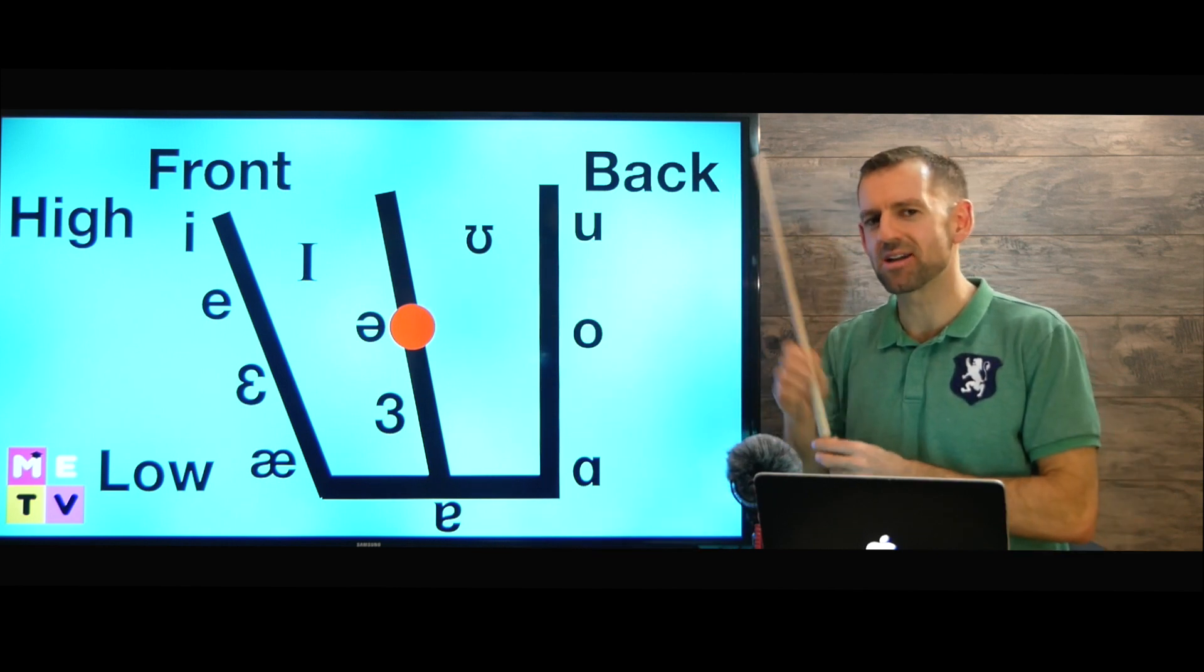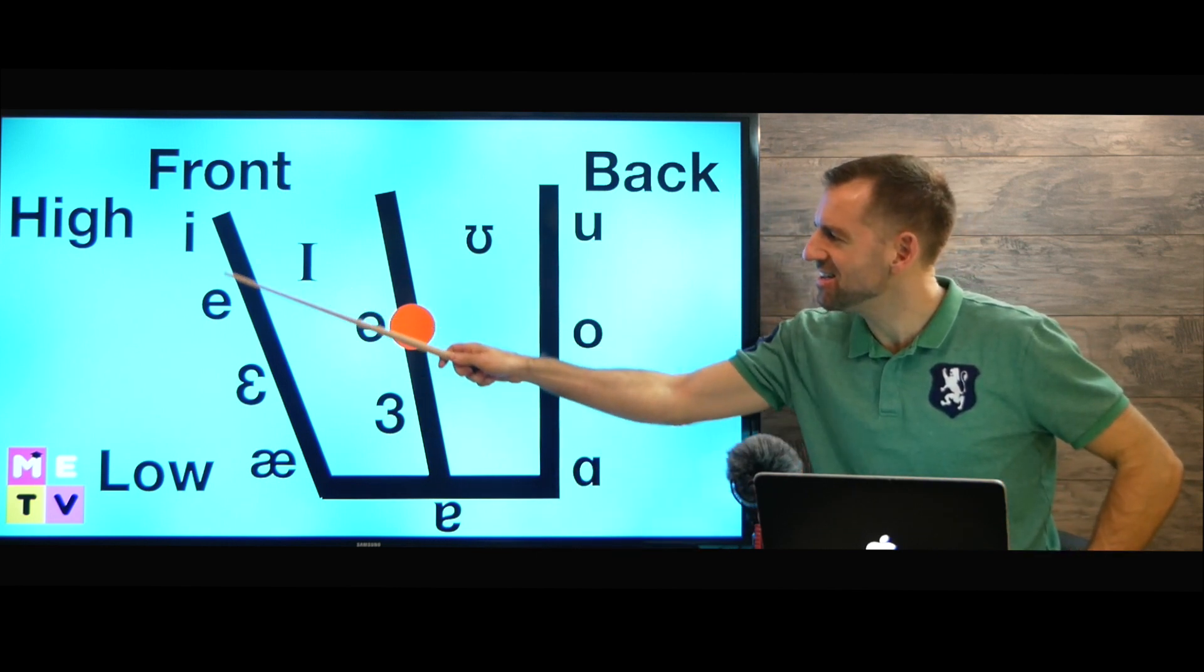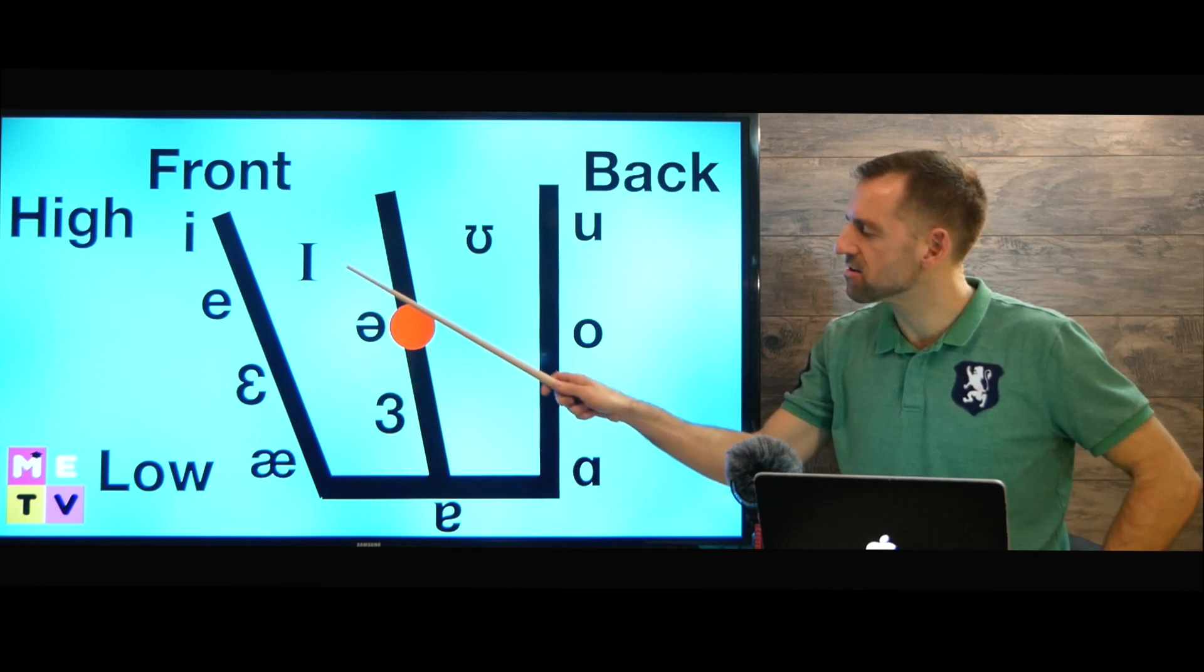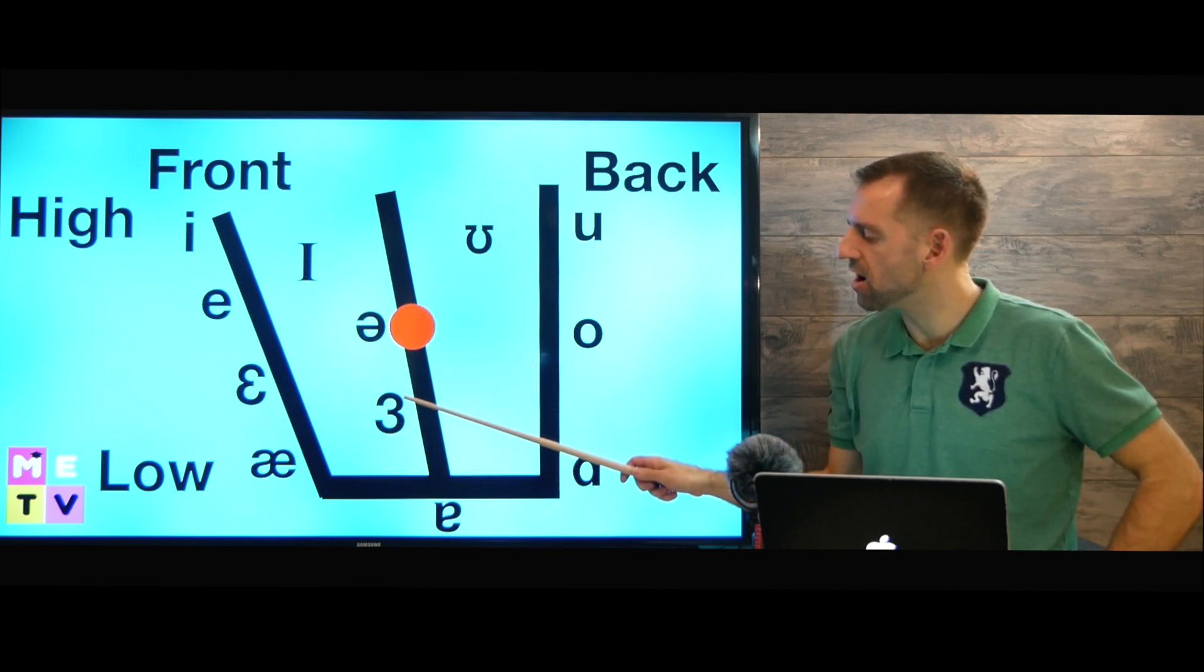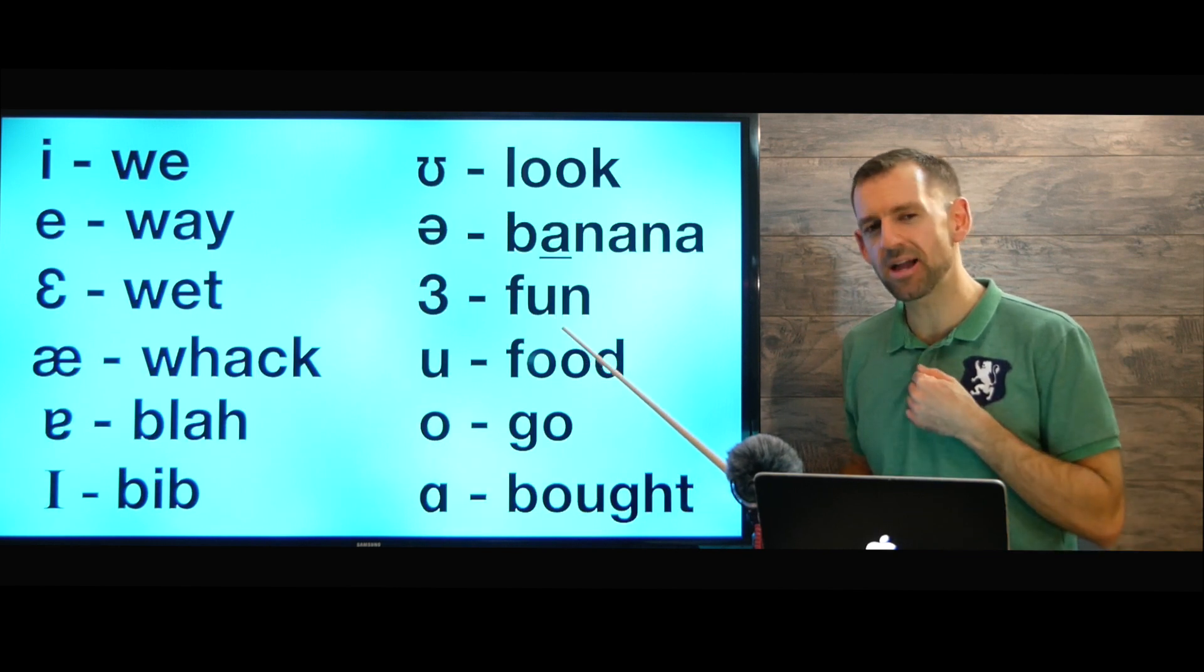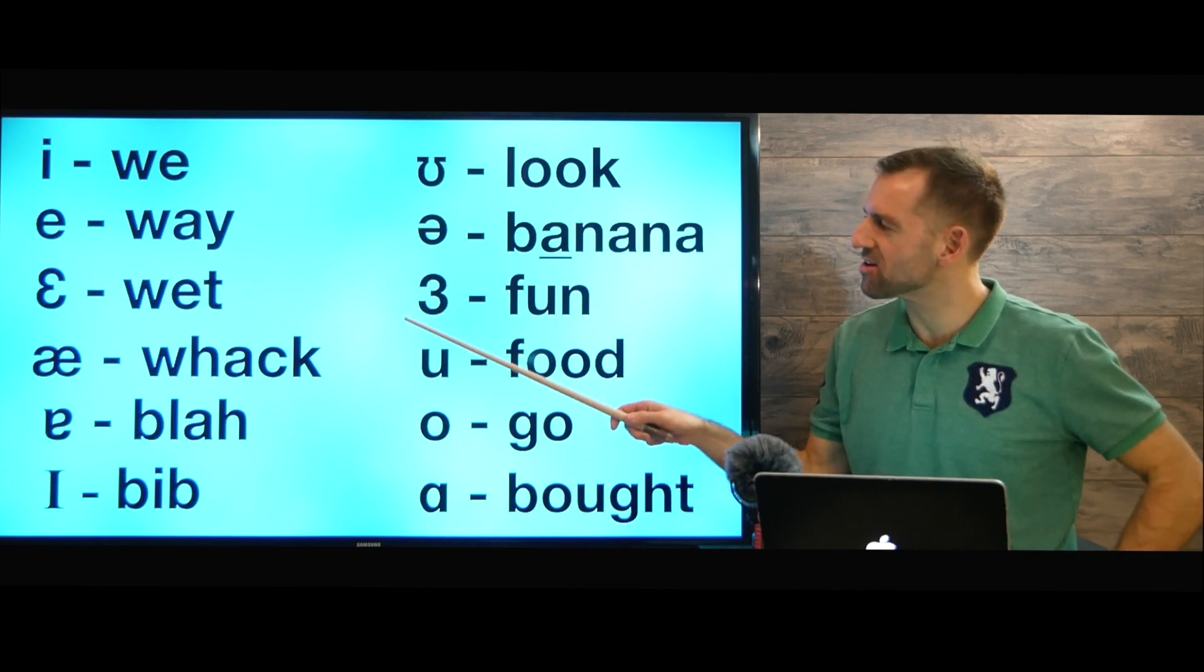Now I made a separate lesson just on vowels, so make sure you go check that out. But I'll just give you a short overview of the vowels. E, I'll use my teacher's stick. E, A, E, A, I, U, A, A, B, U, O, A. There's the 12 vowels in my accent. Let's take a look at them in words.